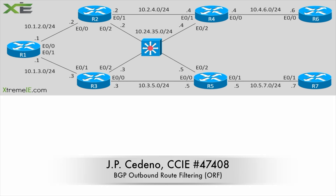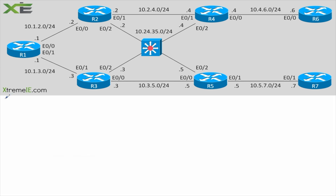Another really cool feature in BGP is what we call Outbound Route Filtering, or simply ORF. Imagine we have a peering between R1 and R3, and R3 is our internet service provider sending us a boatload of routes. We want to filter out the routes we don't need, so we could use a distribute list, prefix list, route map with ACL, or essentially a whole bunch of different route filtering mechanisms on R1.